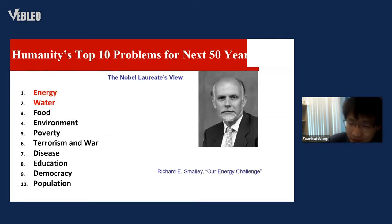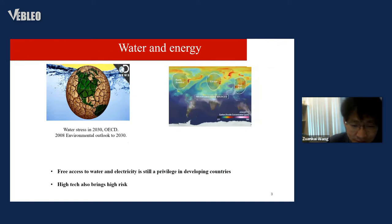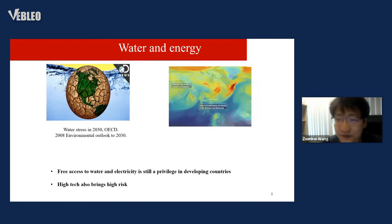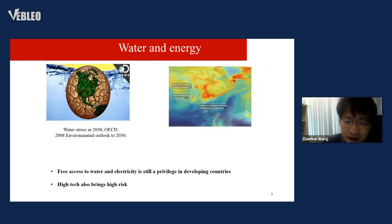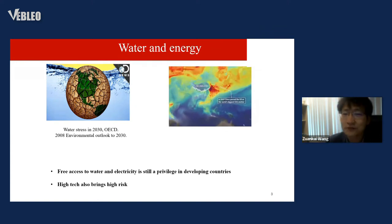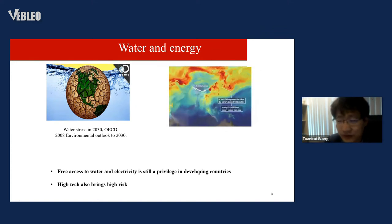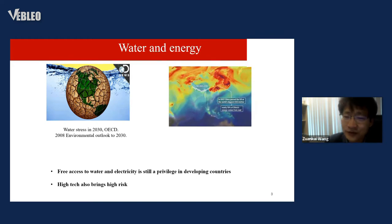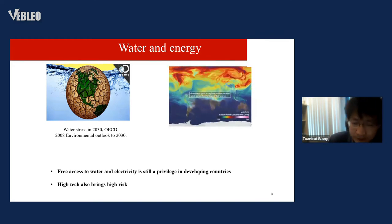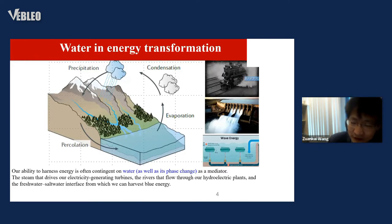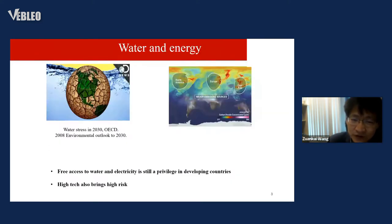As mentioned by Richard Smalley, energy and water are the top two challenges for human beings in the next 50 years. Especially, water and energy are coupled together. We use energy to transport water, collect water, and purify water, and at the same time we also use water to produce energy. So in spite of a lot of progress, there are still challenges in water and energy.